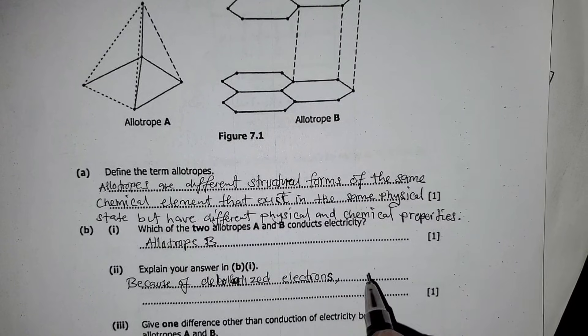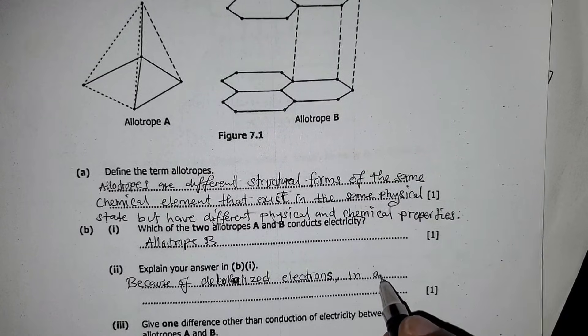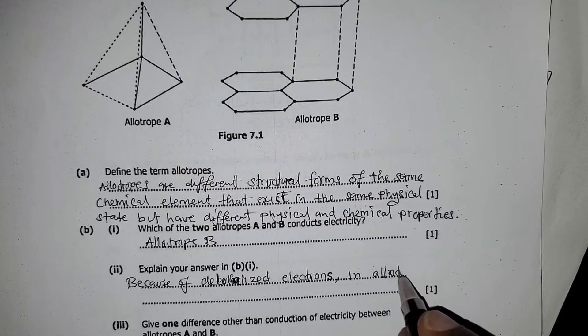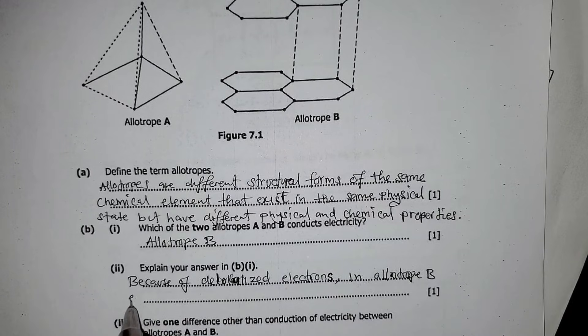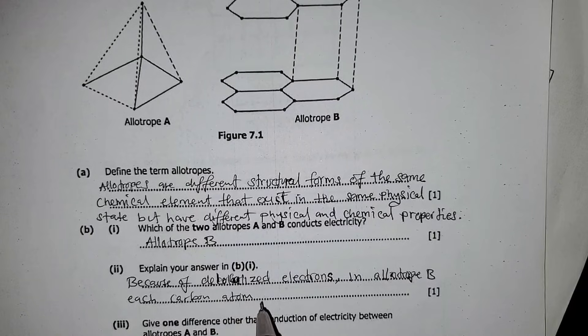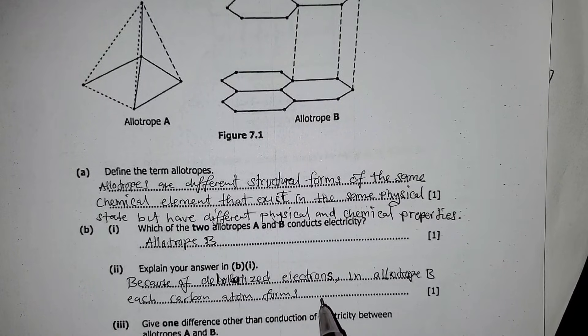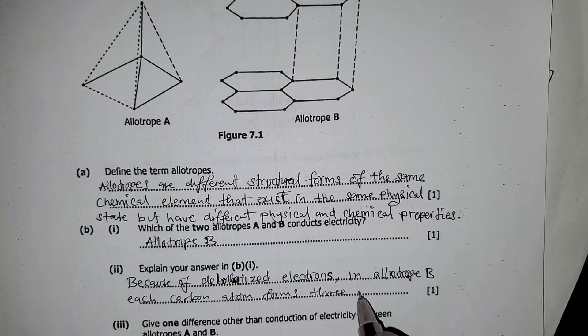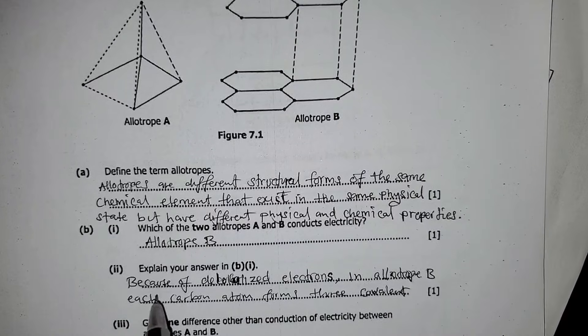So you can say in allotrope B, each carbon atom forms three covalent bonds,